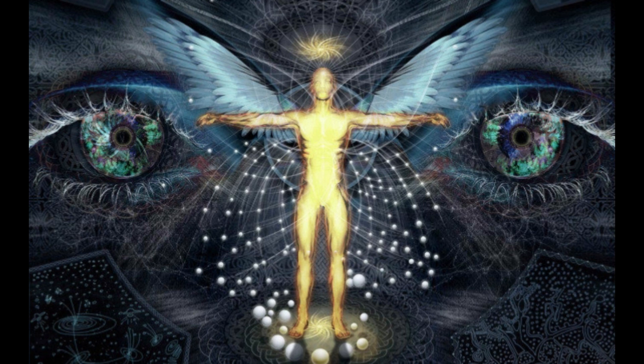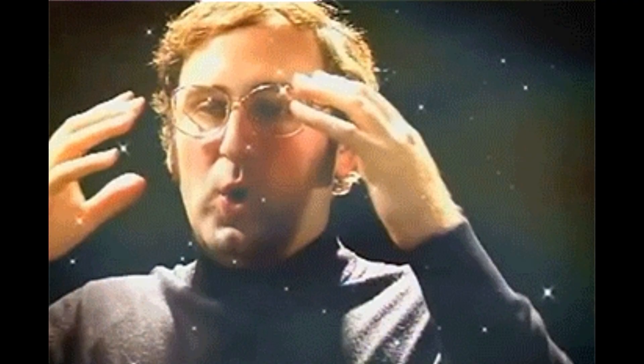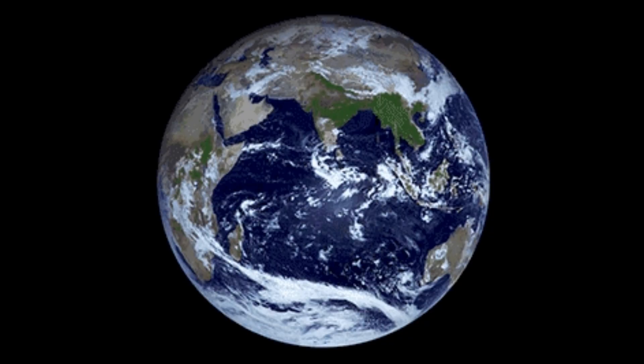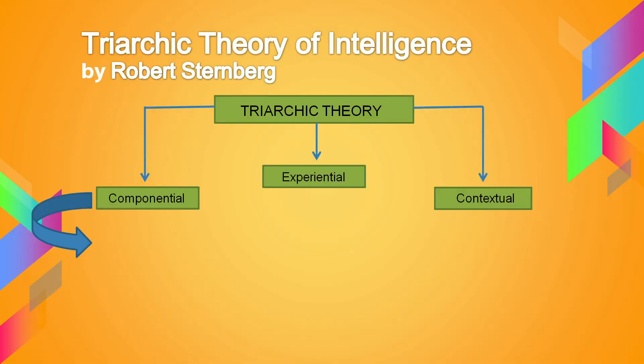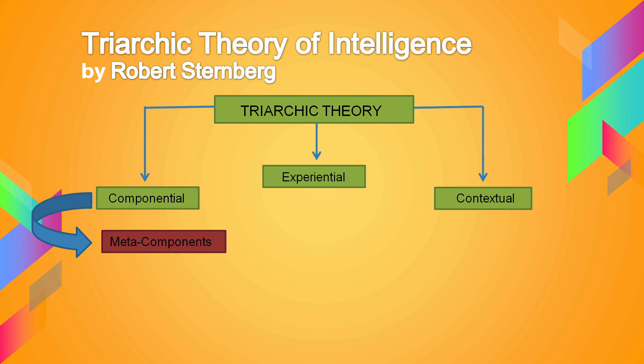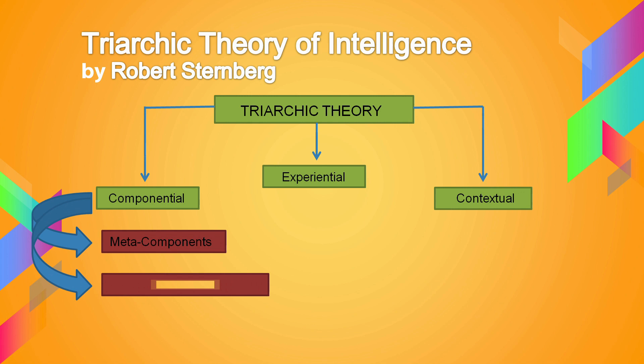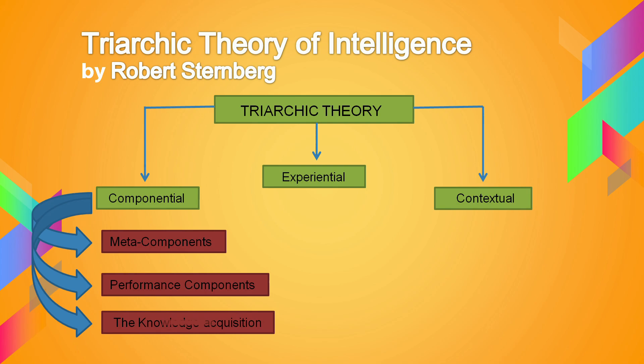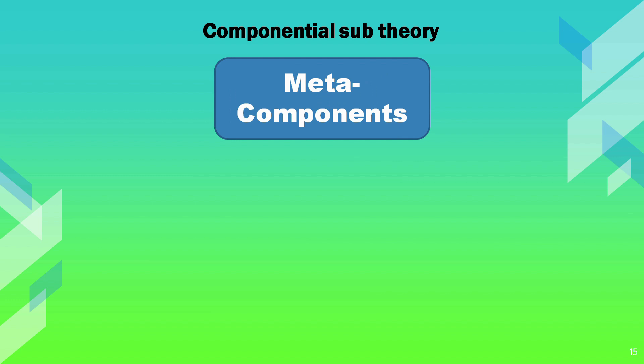Sternberg proposed that intelligence comprises three aspects, dealing with the relation of intelligence to the internal world of the person, to experience, and to the external world. He then elaborated on information processing in three different kinds of components. First, meta components: the person's higher-order executive processes used to plan, monitor, and evaluate problem solving. Second, performance components: lower-order processes used for implementing the commands of the meta components. And lastly, knowledge acquisition components: the processes used for learning how to solve the problems in the first place. Components are highly interdependent — meta components activate performance and knowledge acquisition components, which in turn provide feedback to the meta components.